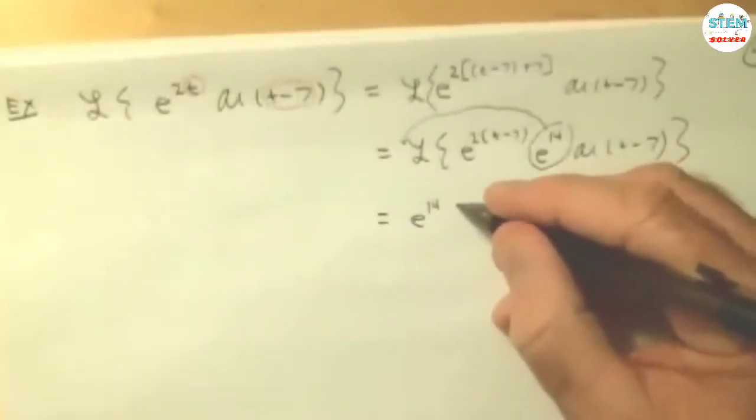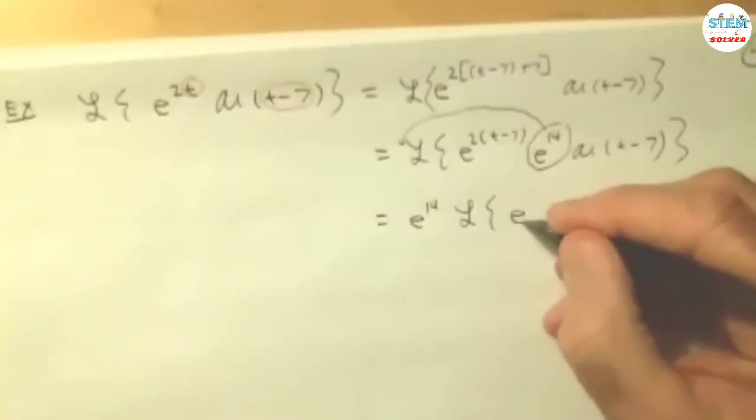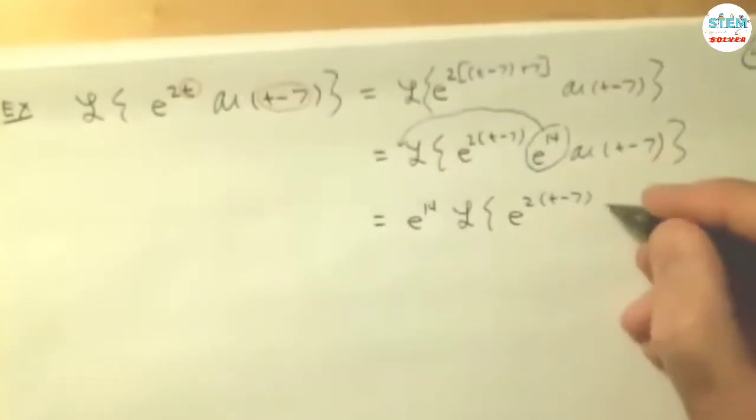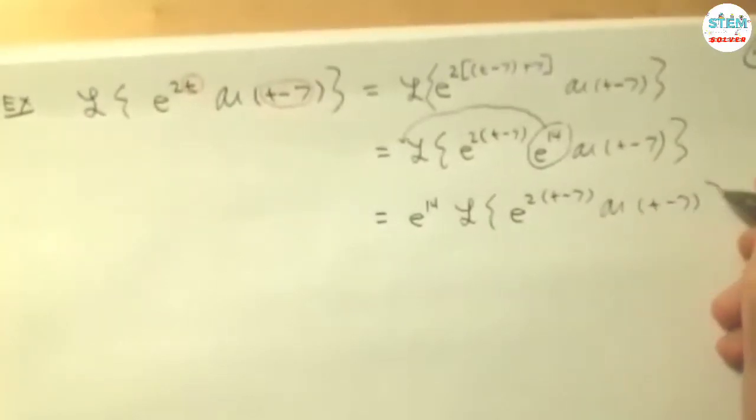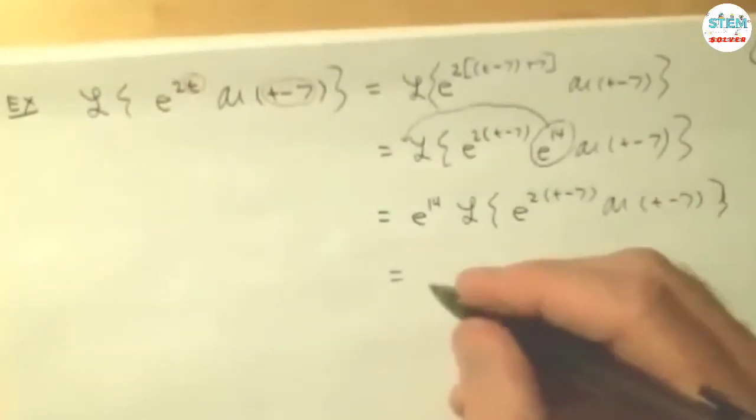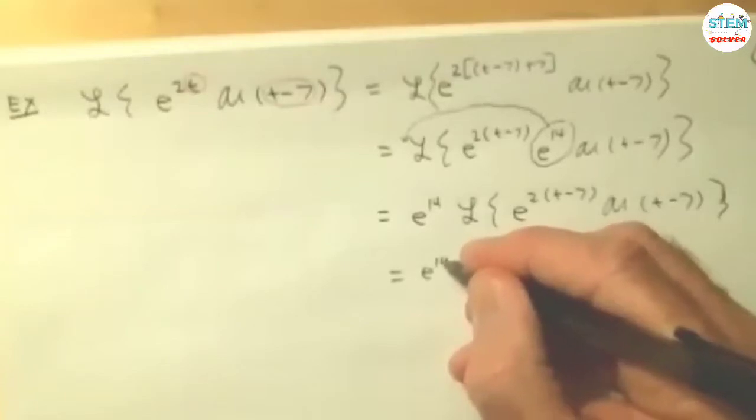So you pull the e to the 14 out, and then you have the Laplace transform of e to the 2 times t minus 7, u of t minus 7.